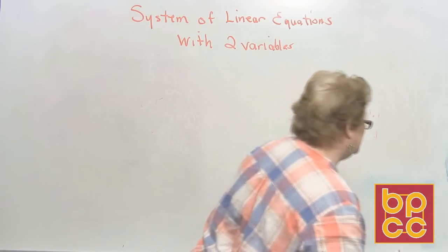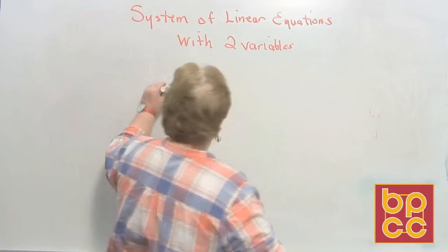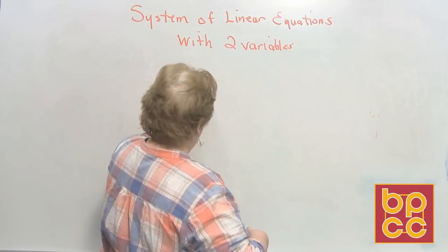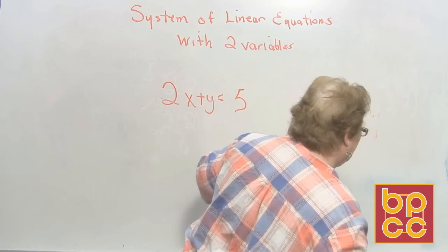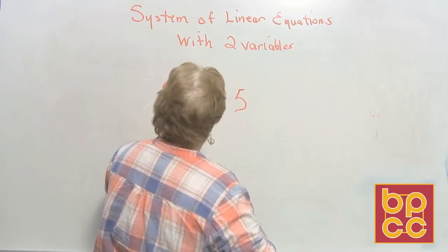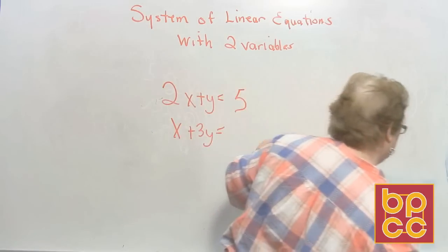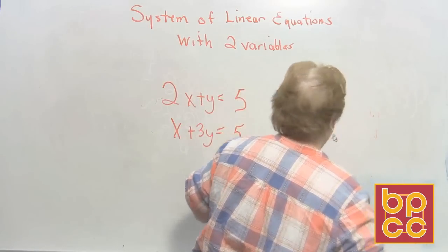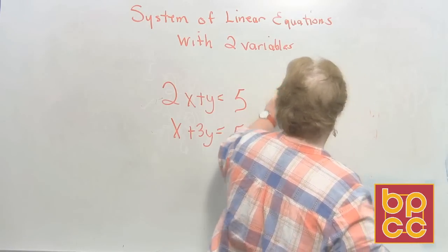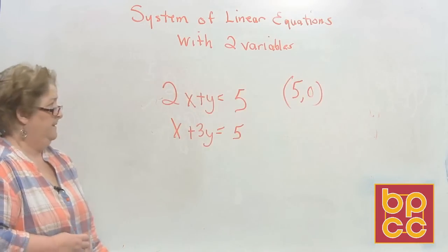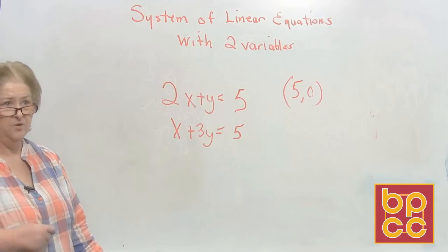Let's try another one. 2x plus y equals 5, and x plus 3y equals 5. This time I'd like to use 5 comma 0, and we'll see if this will work for both of them.